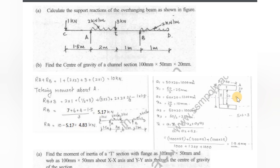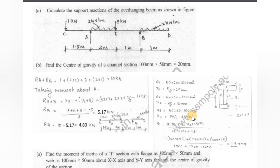Second part: Find the center of gravity of a channel section 100 mm × 50 mm × 20 mm. The X-axis is an axis of symmetry, so the centroid lies on it. We divide the channel into three rectangles: Rectangle 1: 15 × 20, Rectangle 2: 16 × 20, Rectangle 3: 50 × 20. x1 = 50/2 = 25, x2 = 20/2 = 10, x3 = 50/2 = 25. Substituting into x̄ = (A1·x1 + A2·x2 + A3·x3)/(A1 + A2 + A3) gives the centroid x̄.